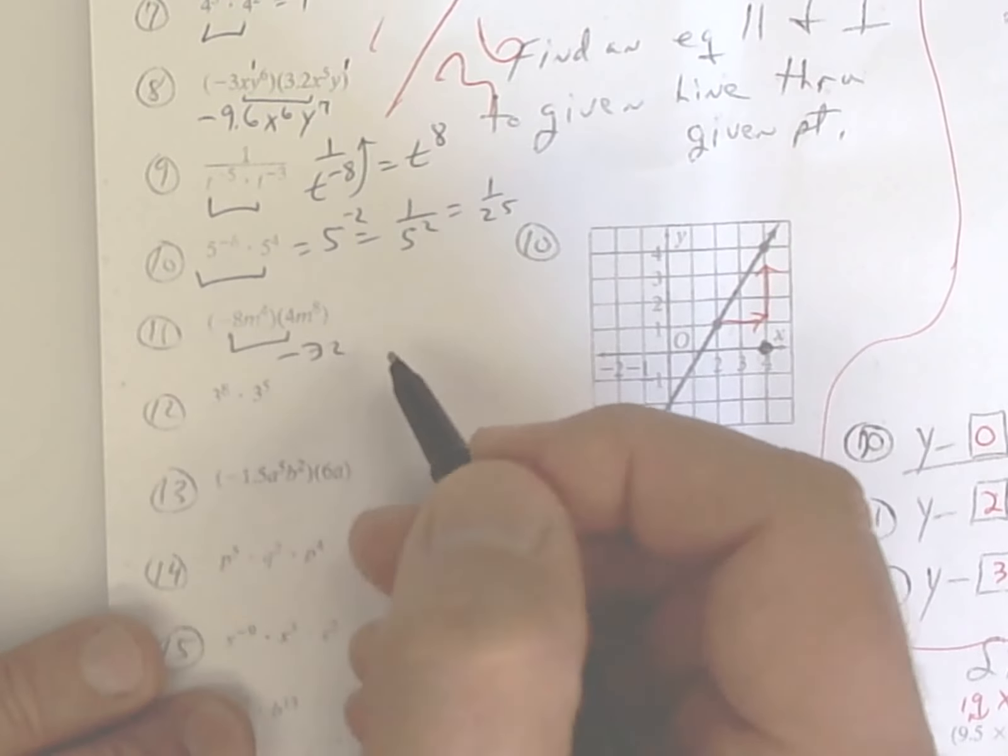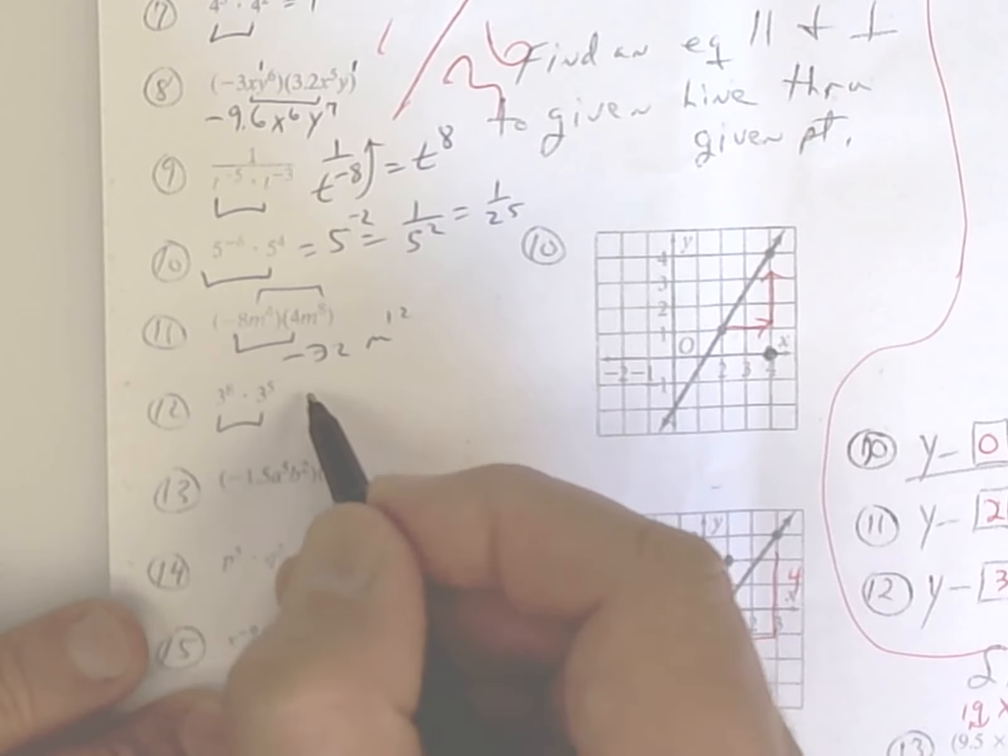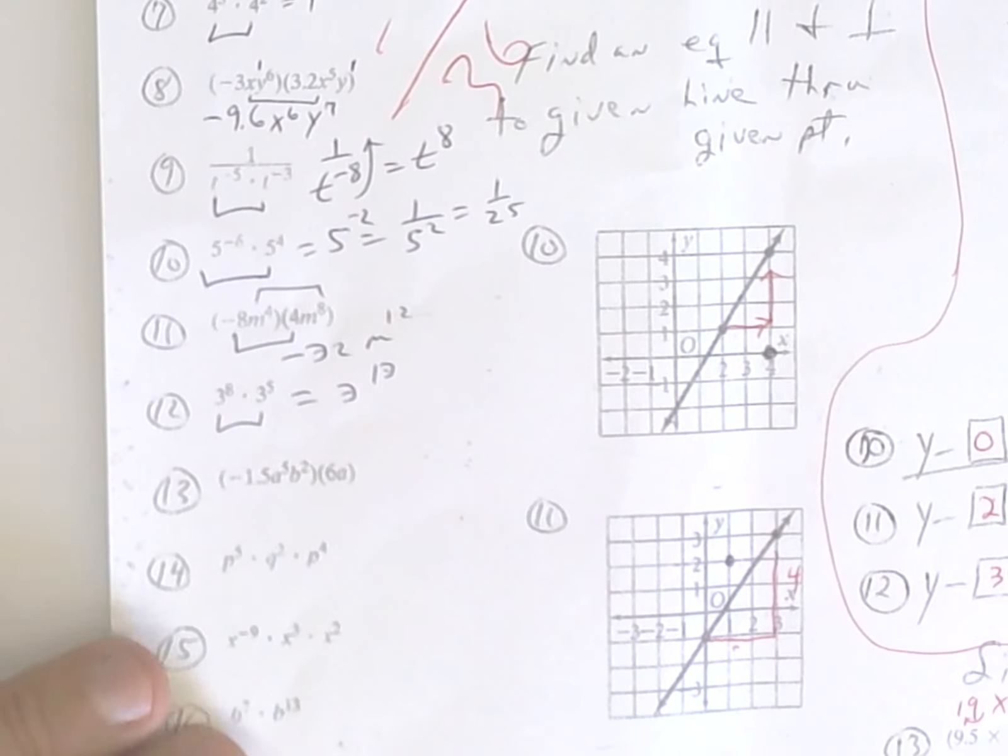Negative 32. And then you add that up and you get m12. Same base, keep it. So it's going to be 3 to the 13th power. Real large number.